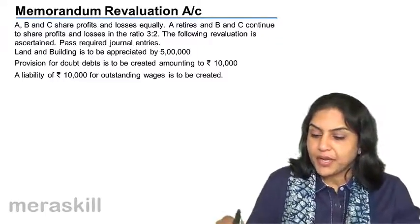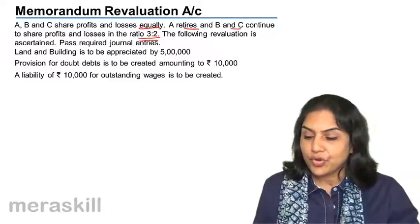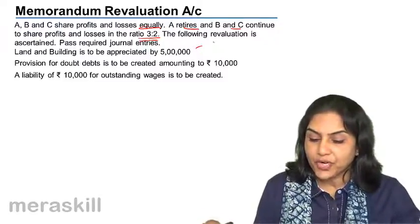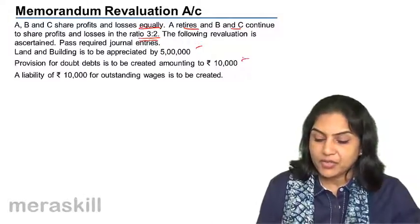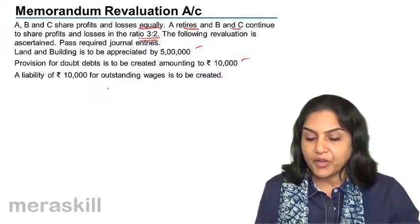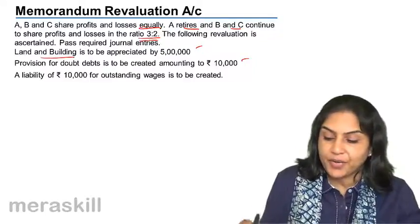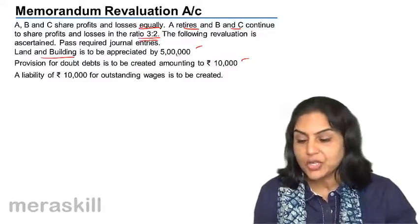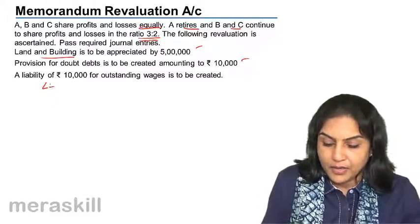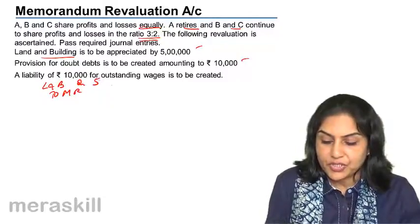Let us check this problem. A retires; B and C continue, but the new ratio is now 3:2. The revaluation details are: land and building increase by 5 lakh; provision for doubtful debts 10,000; and a liability of 10,000 for outstanding wages. For the first entry — increase in land and building — we debit land and building account and credit memorandum revaluation account: 5 lakh.